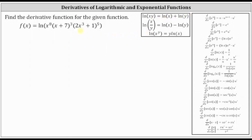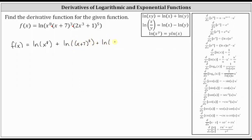Notice in our case, we have the natural log involving three products where we have natural log of x to the eighth times the cube of x plus seven times the fifth power of two x cubed plus one. This means we can write f of x as f of x equals natural log of x to the eighth plus natural log of the third power of x plus seven plus natural log of the fifth power of two x cubed plus one.